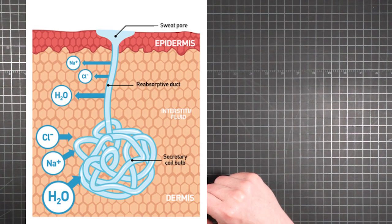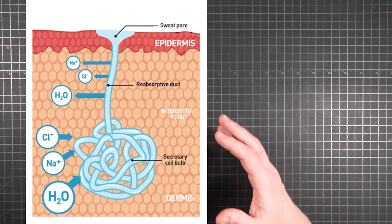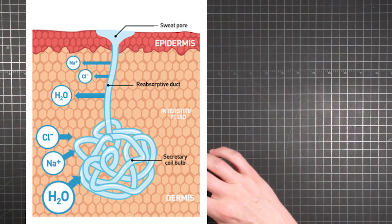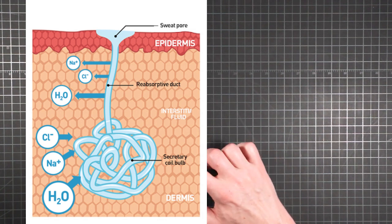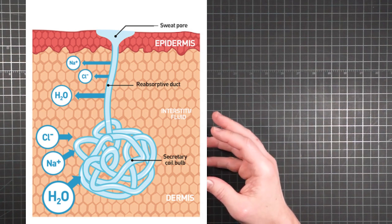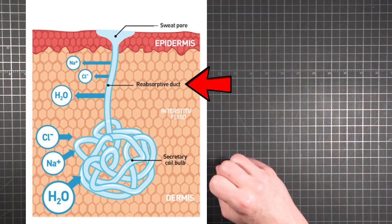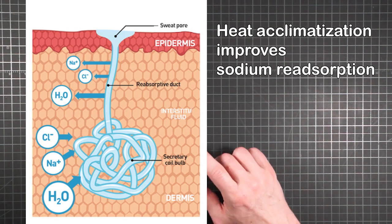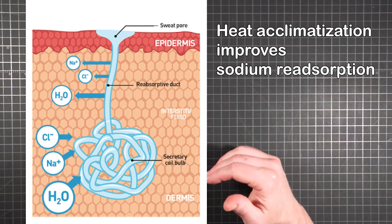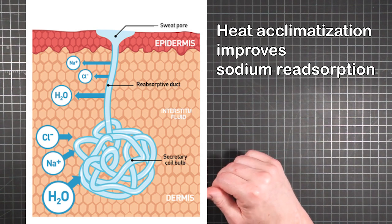So basically, sodium is used in the sweat glands to draw water out of the body via osmosis so that water can be used for evaporative cooling. The sweat glands then do their best job of trying to reabsorb that sodium in order to conserve a precious resource. And what heat acclimation does is make your sweat glands better at reabsorption, so more sodium is saved rather than wasted on your skin.